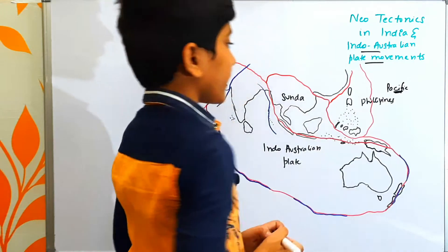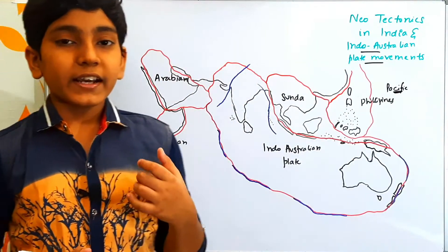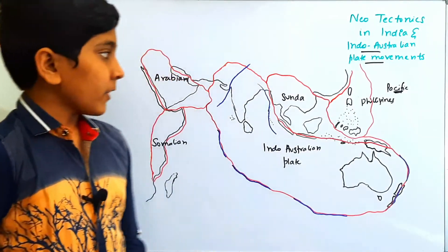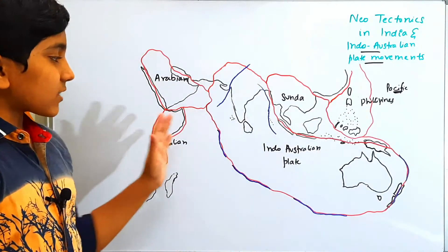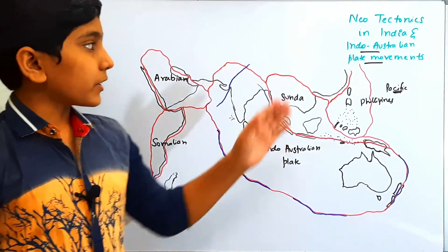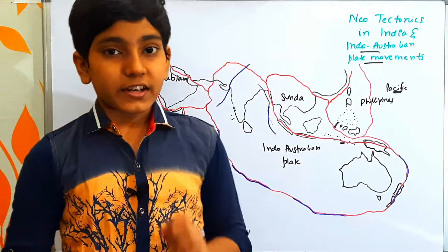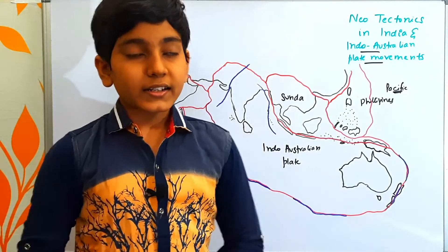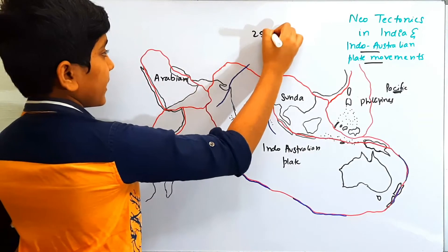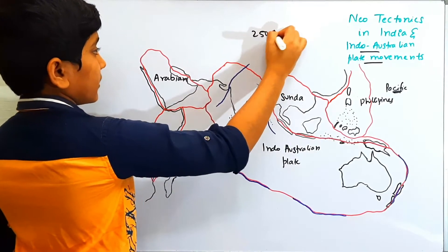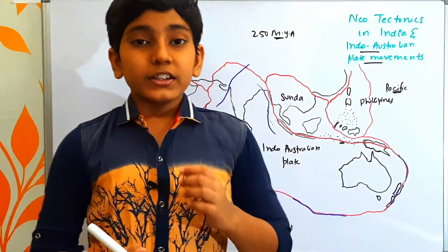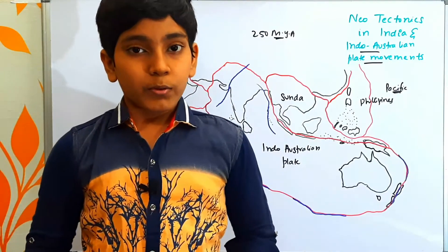And here we have the Pacific plate, which is the largest plate on the Earth's surface, covering an area of 20% of the Earth's crust. These are some major plates. Now, in the history of these plates, we have already seen that by the time of 250 million years ago, during the Carboniferous period, the Pangaea had broken into two parts.